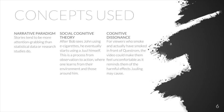We implemented the social cognitive theory into Bob's story: after he sees John using e-cigarettes, he eventually starts using a Juul himself. This is a process from observation to action, where one learns from their environment and those around them.